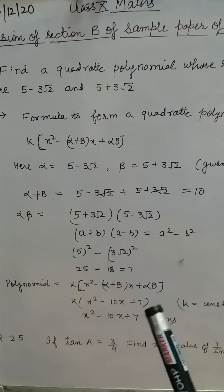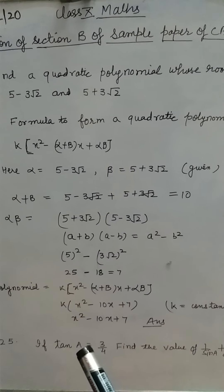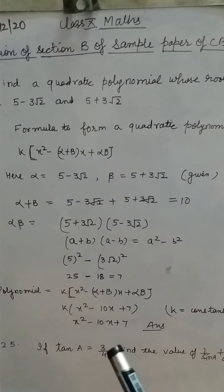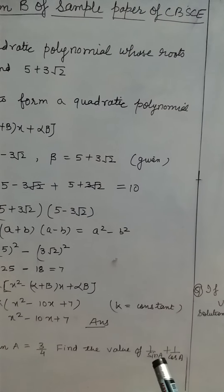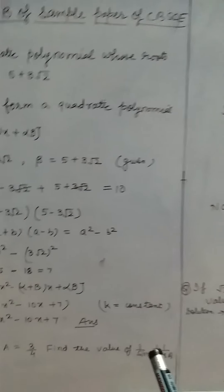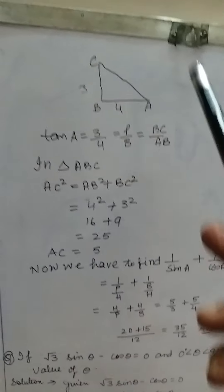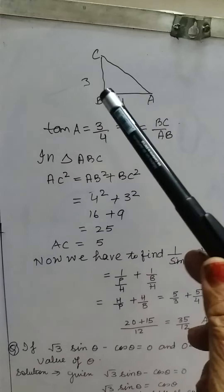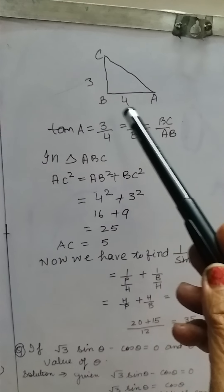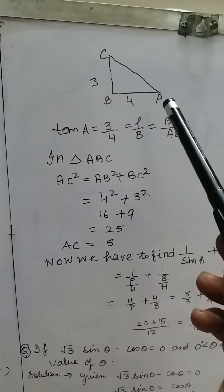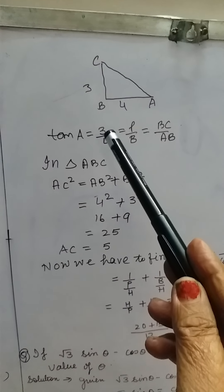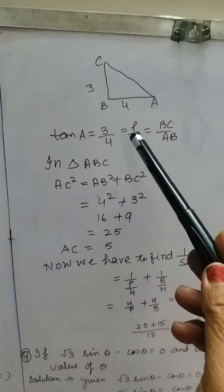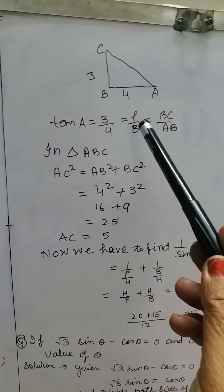In question number 25, it is given that tan A equals 3 by 4. We have to find the value of 1 upon sin A plus 1 upon cos A. First we will draw a right angle triangle with the right angle at B and angle A given. For tan A equal to 3 by 4, the tan formula is perpendicular by base.